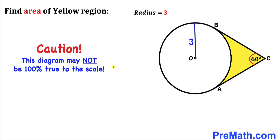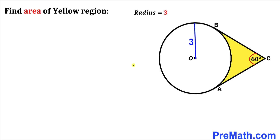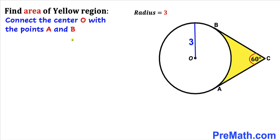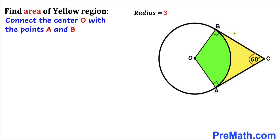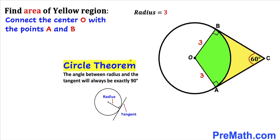Note that this figure may not be 100% true to scale. Let's get started. We connect center O with the points of tangency A and B. We can see that OA and OB are the radii of this circle, and our radius is 3 units, so both sides are 3 units. This gives us our green sector.